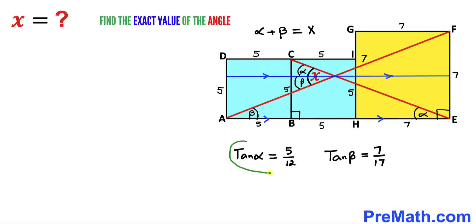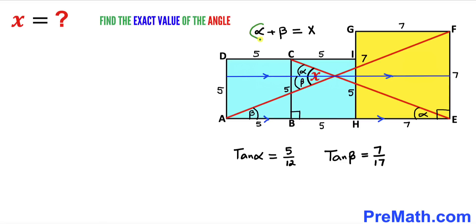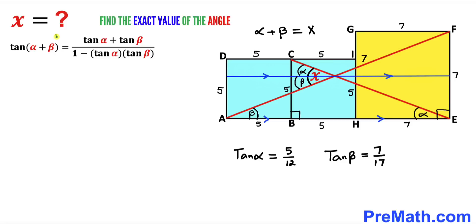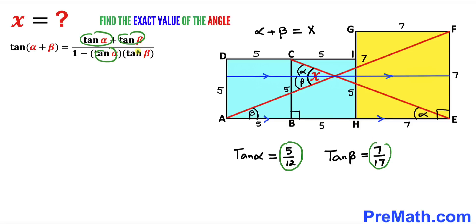So tangent of alpha = 5/12 and tangent of beta = 7/17. Since we want the exact value of alpha + beta, we will use the tangent sum formula: tan(α + β) = (tan α + tan β) / (1 − tan α · tan β). We substitute tan α = 5/12 and tan β = 7/17.